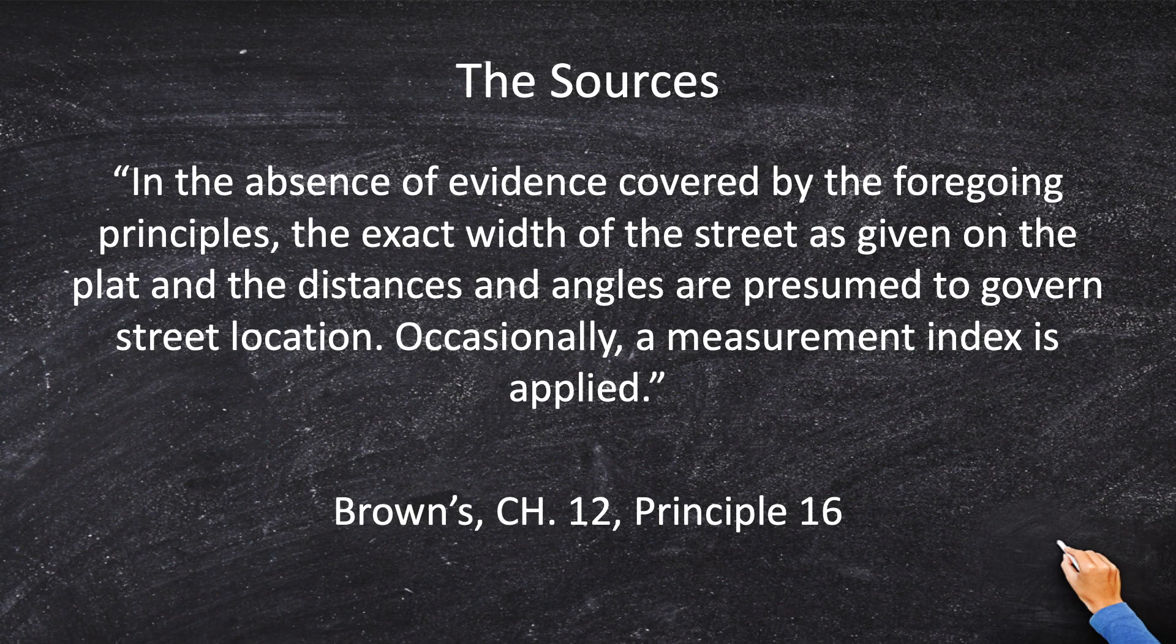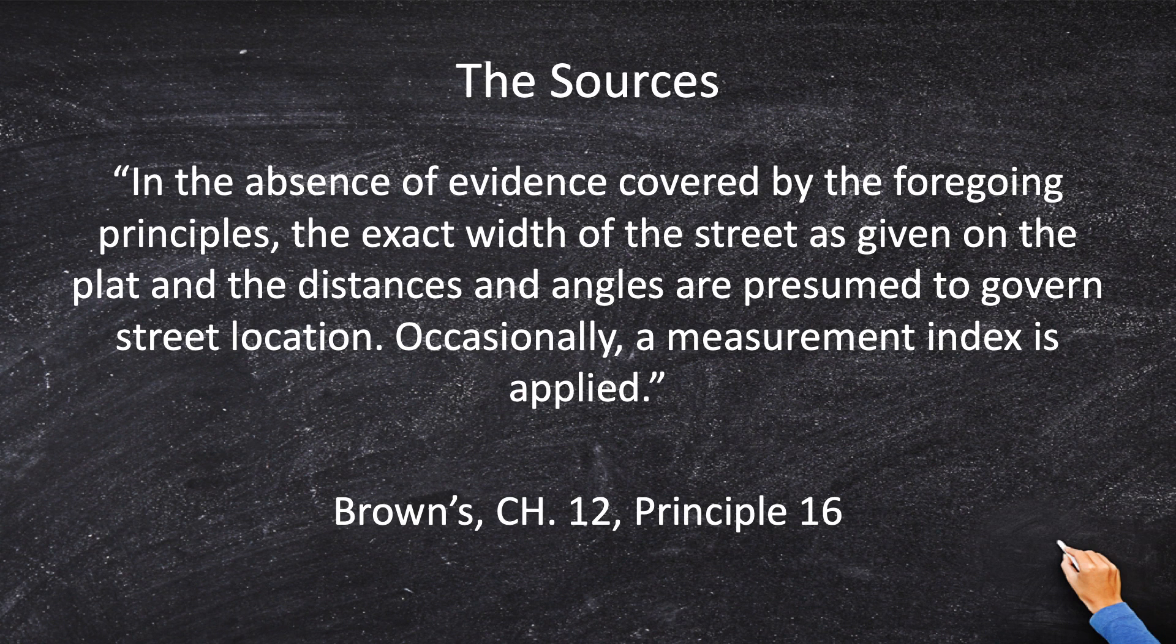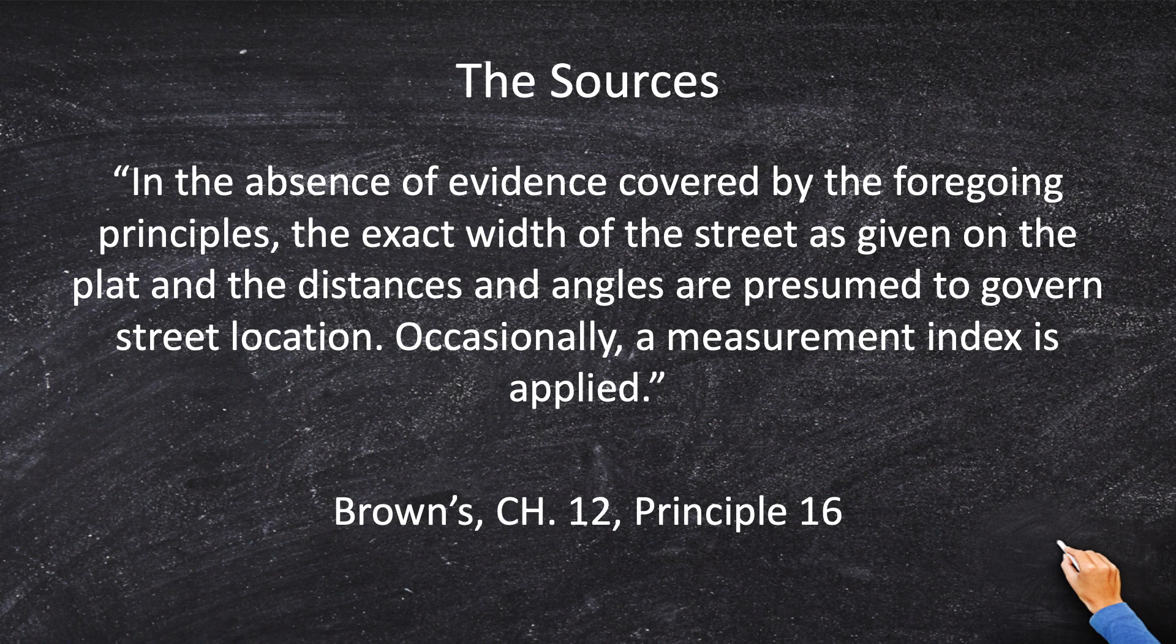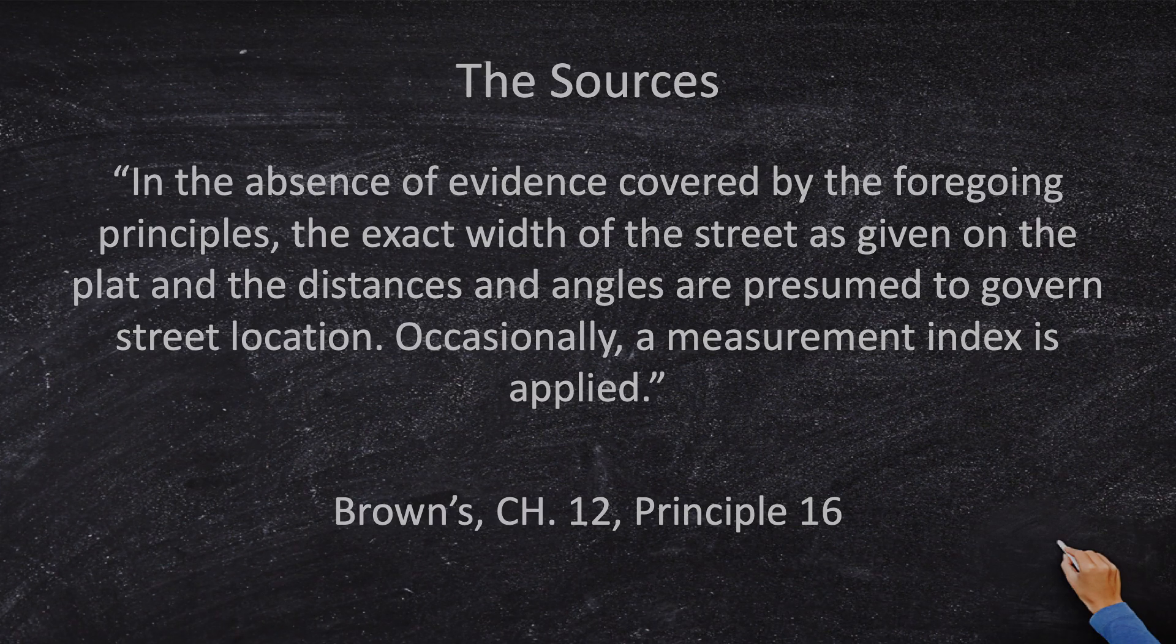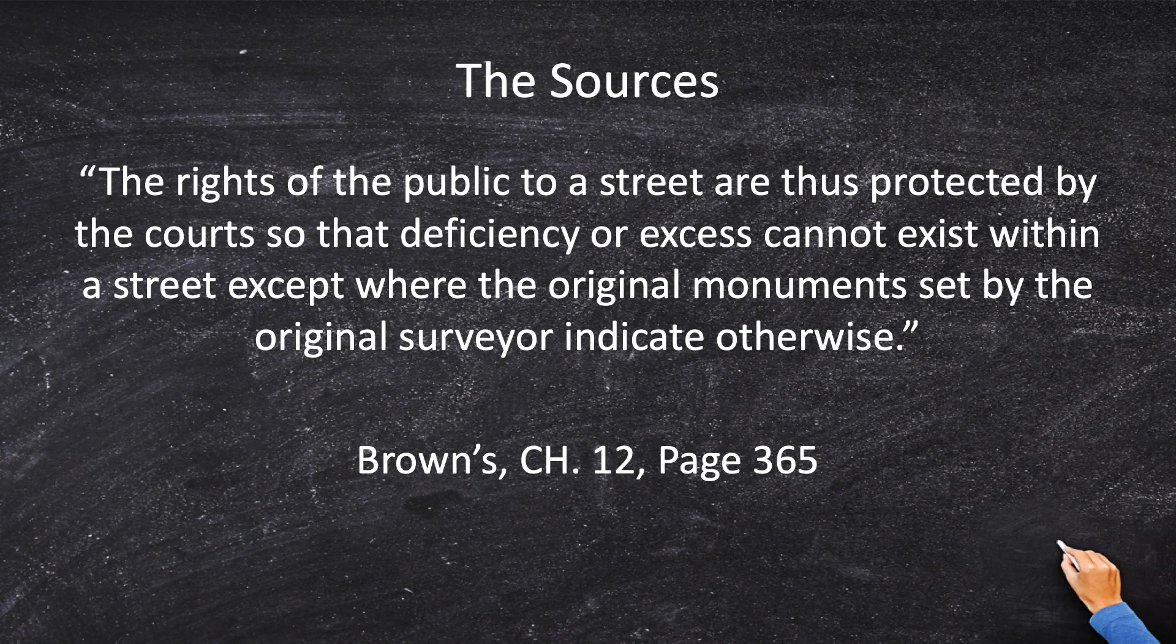According to Brown's Boundary Control, in the absence of evidence covered by the foregoing principles, the exact width of the street as given on the plat and the distances and angles given on the plat are presumed to govern street location. Why is that? Why are we going to give the property owners within the subdivision more or less land? But we are almost always going to hold the streets as the exact dimensions as they are shown on the plat. Once again, Brown answers that question as well.